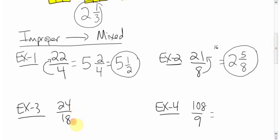18 going into 24, 18 goes into 24 once. How much left over? 6 left over. And the denominator stays the same as 18.